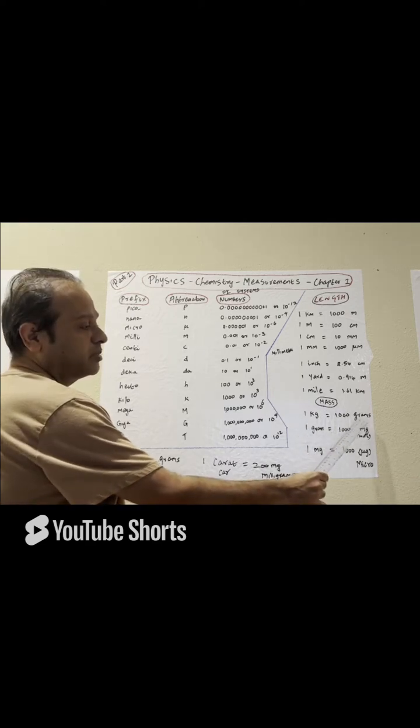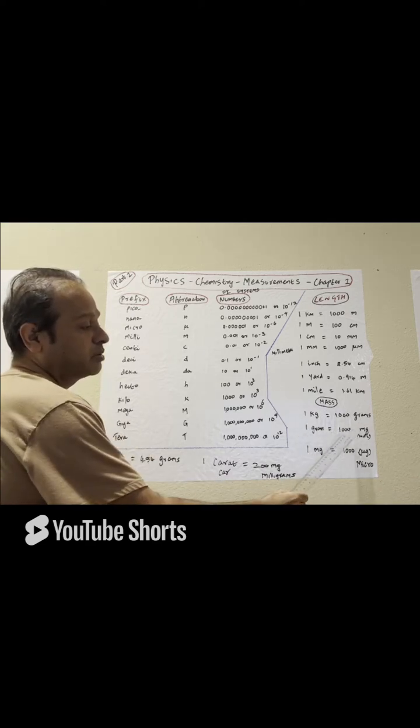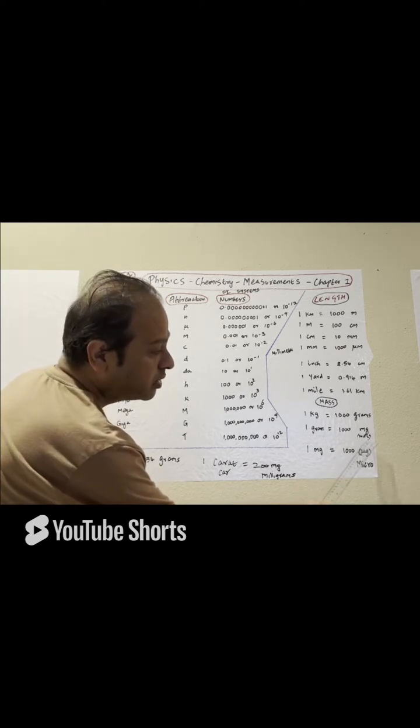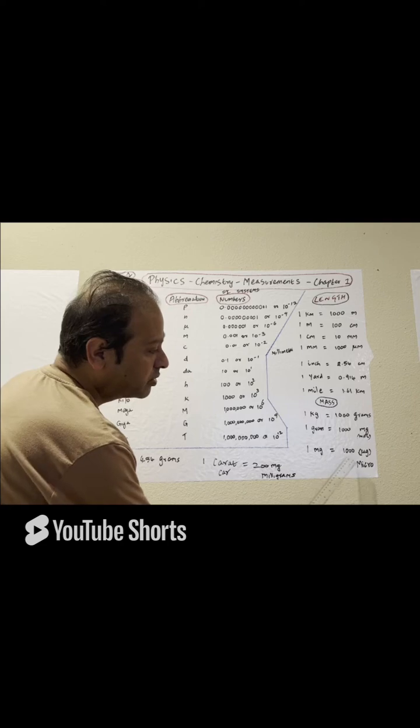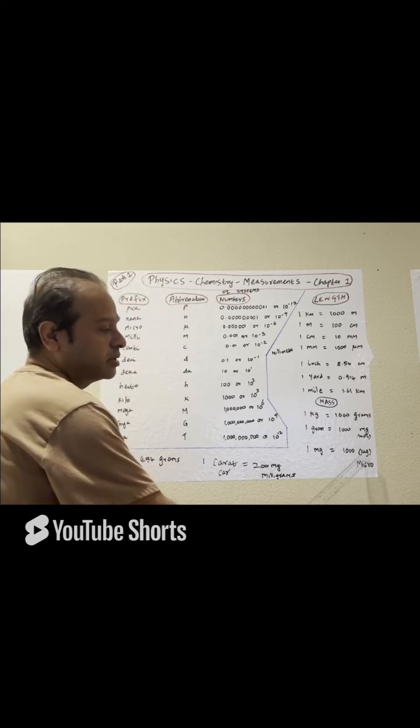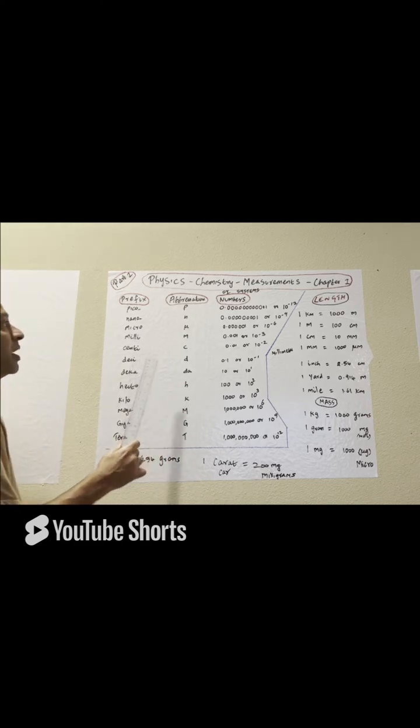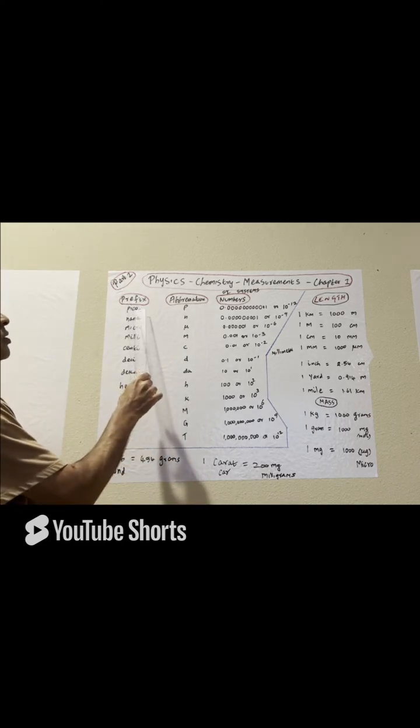One kilogram equals one thousand grams, one gram equals one thousand milligrams, and one milligram equals one thousand micrograms. Micro is the symbol here. Now let's come back here to pico.